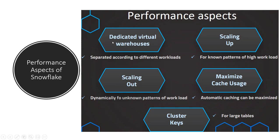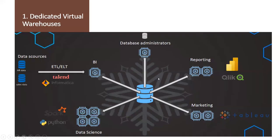There are five main aspects we can use to further improve Snowflake performance: first, creating a dedicated virtual warehouse; second, scaling up; third, scaling out; fourth, leveraging Snowflake's caching mechanism; and fifth, data clustering with cluster keys. A virtual warehouse is simply a compute resource — the amount of computation power you purchase.